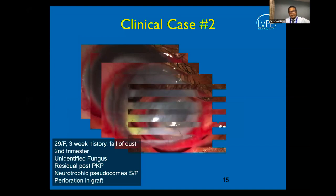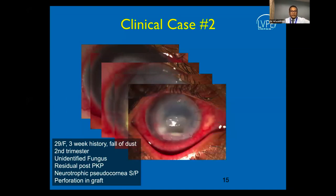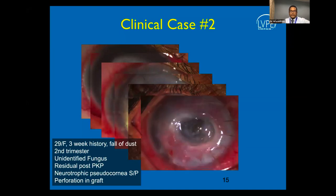The graft subsequently had a neurotrophic keratitis, leading to central graft melt. The final picture showed a neurotrophic graft with a pseudocornea and a perforation in the graft.